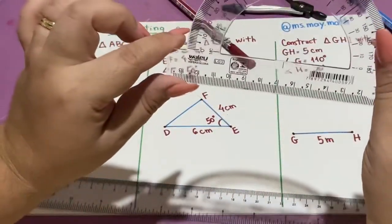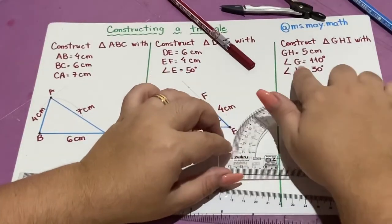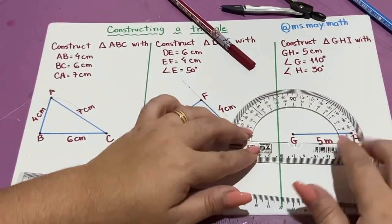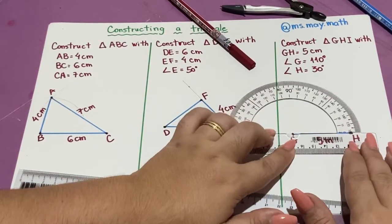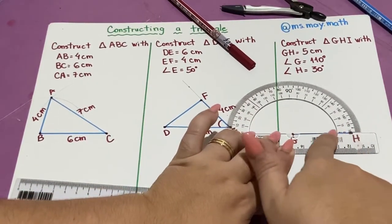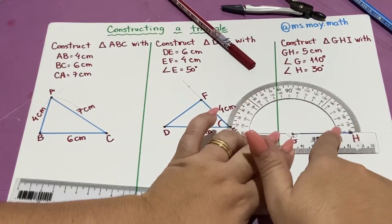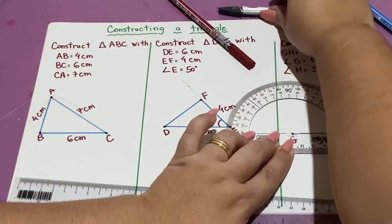Again, with my protractor, I will measure the angle G, 110 degrees. So I'm going to start here, and measuring in the inner space, 110. That'll be here.